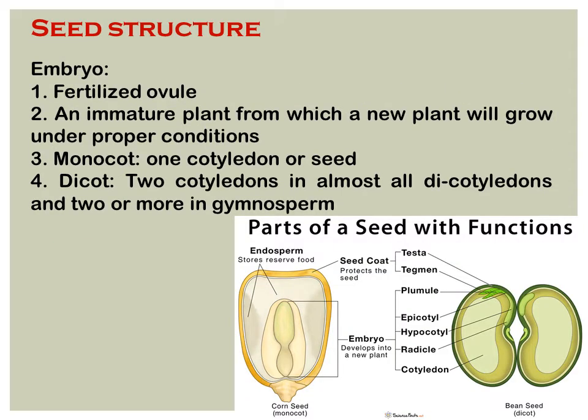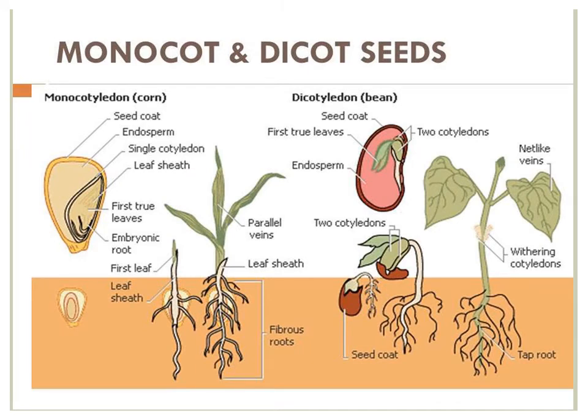Now looking at seed structure: we have the embryo, which is a fertilized ovule and an immature plant from which a new plant will grow under proper conditions. There are two categories: monocot seeds and dicot seeds. For example, monocot seeds — corn (maize) — and dicot seeds — bean.